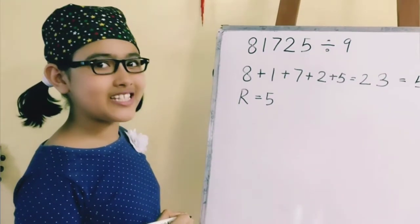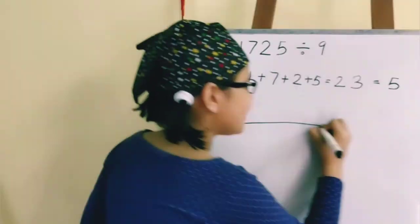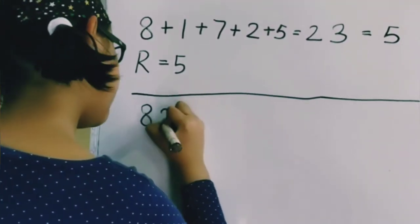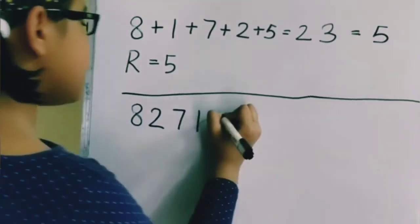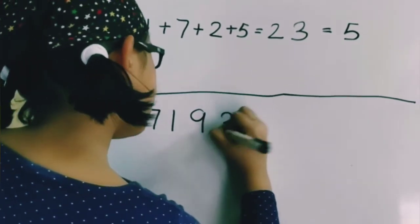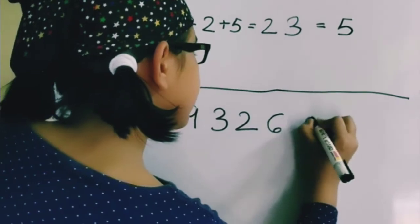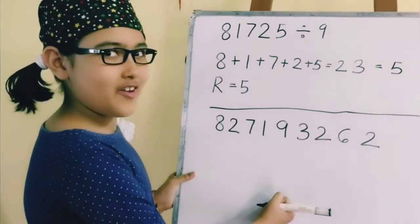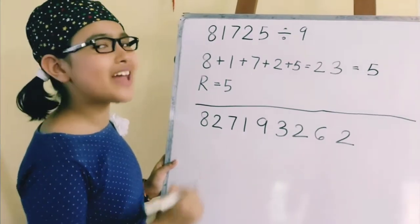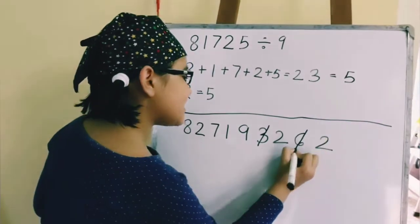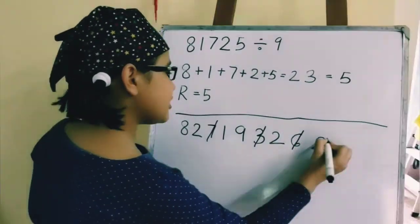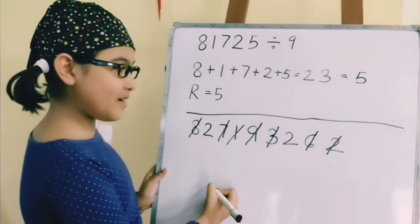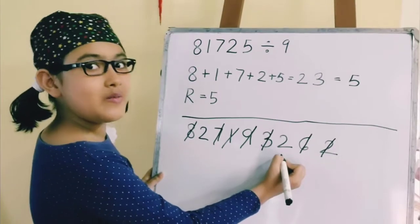Now, let's make the digit sum easier. Let's take a big number: 8, 2, 7, 1, 1, 9, 3, 2, 6, 2. This number is quite big, but it is very easy. You just have to make 9 and cut them. Like, 3 and 6 makes 9, so we'll cut it. 7 and 2 will cut it. 8 and 1, and 9 itself. So, what numbers are remaining? 2 and 2 makes 4.